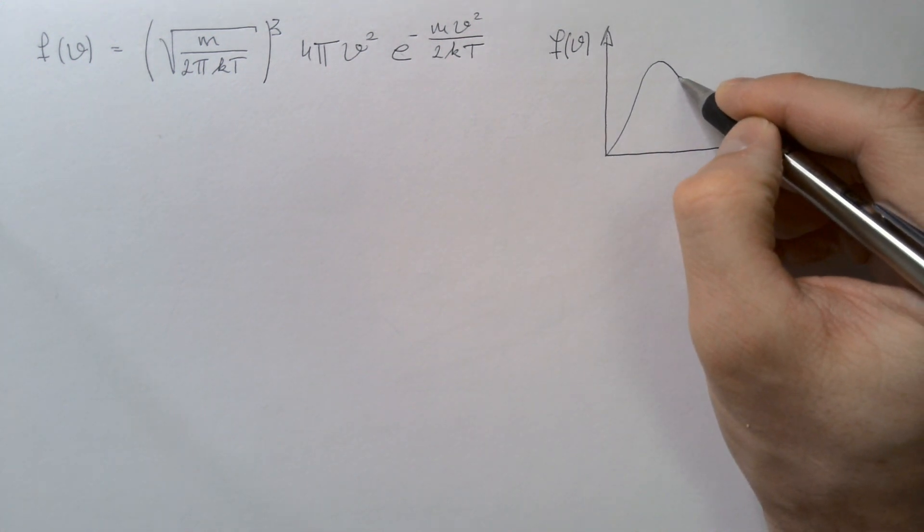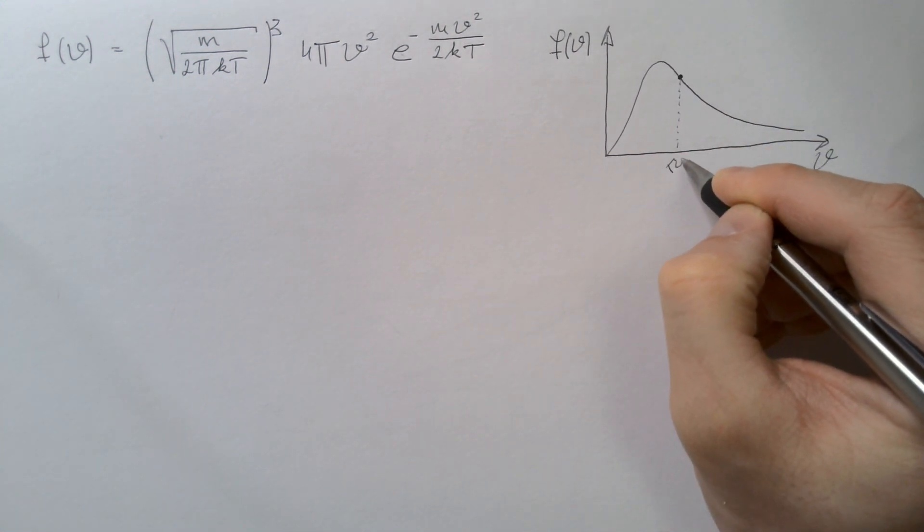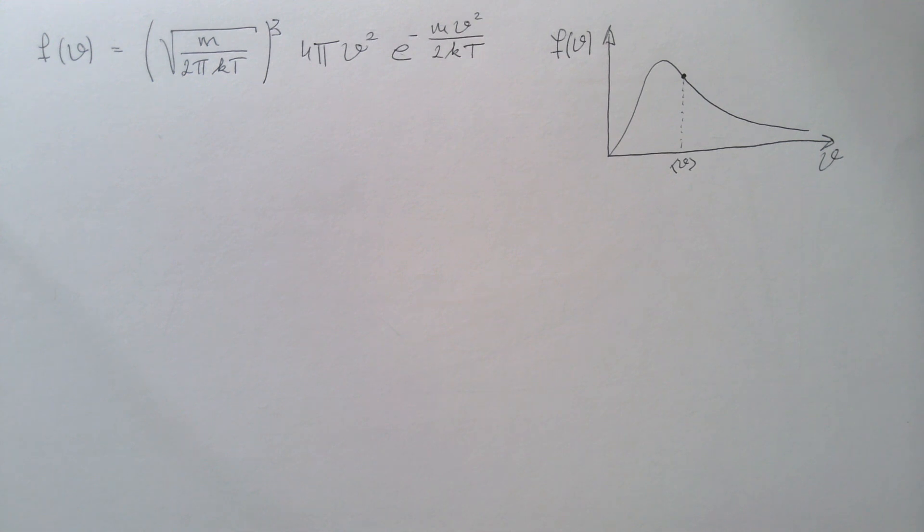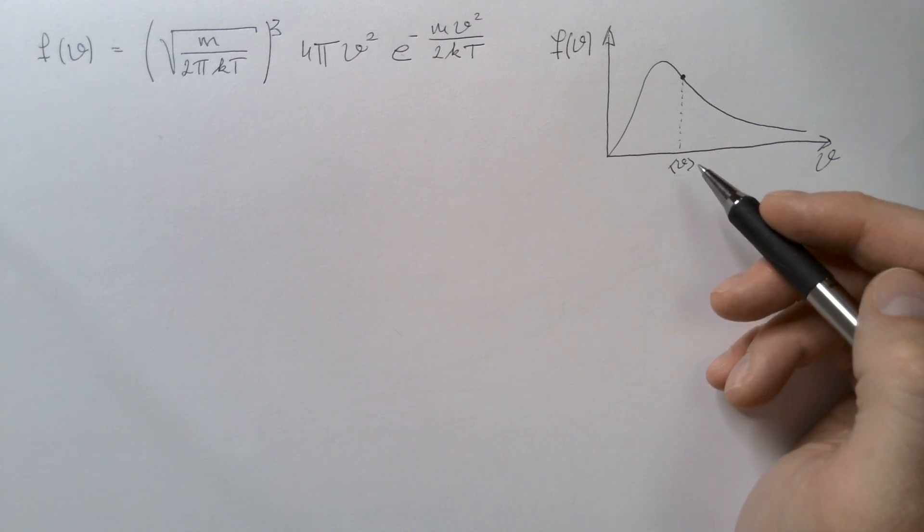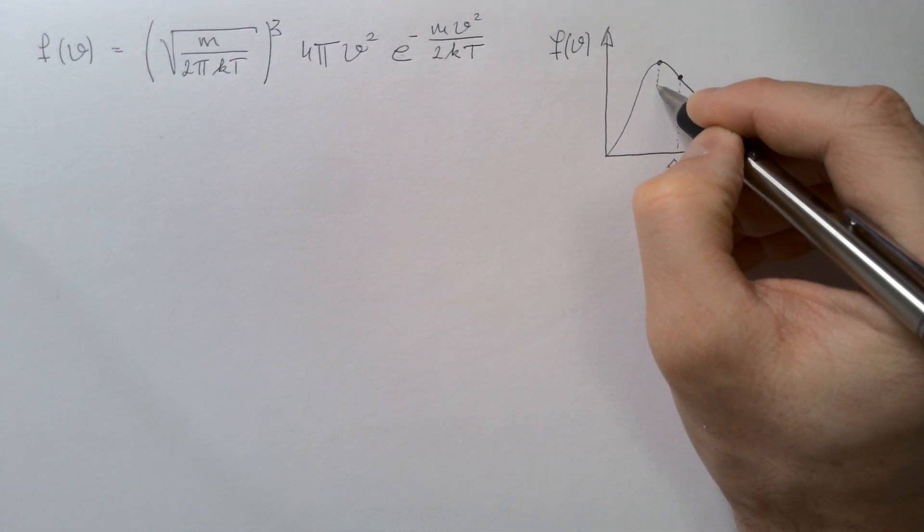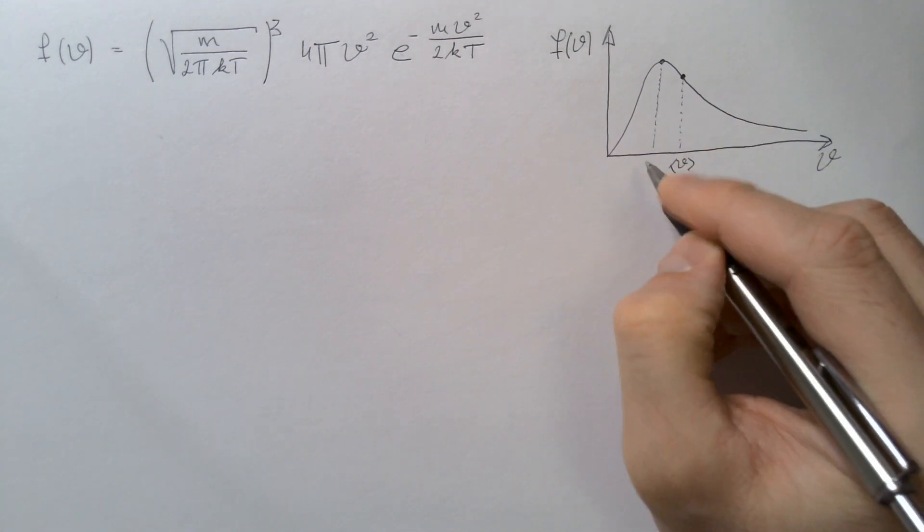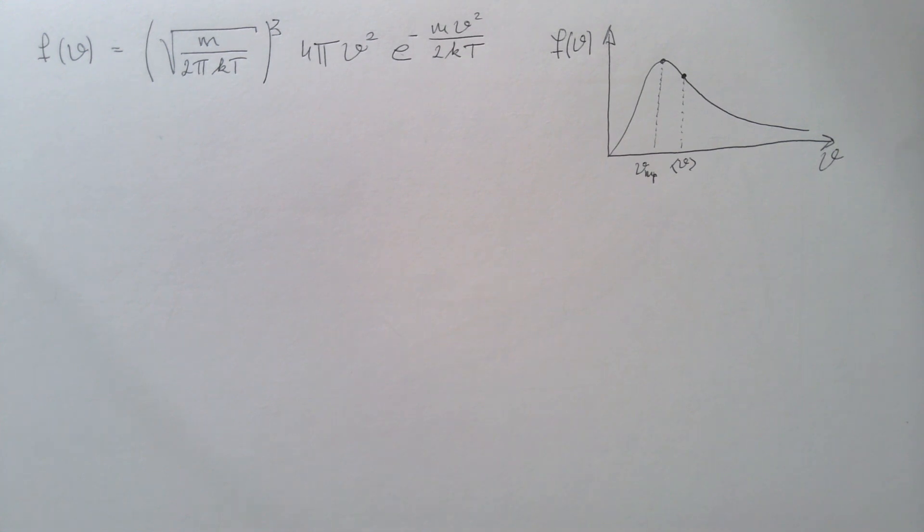We also saw that maybe somewhere here is the mean speed of atoms in the gas, and because distribution is skewed, the mean speed is not the most probable speed. The most probable speed is associated with the peak of this distribution, and I will call it vmp, most probable speed. How does one find this most probable speed?